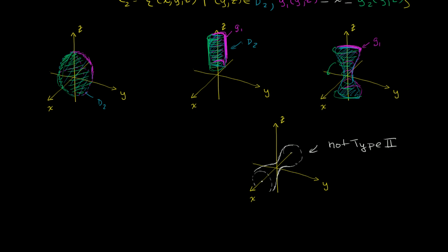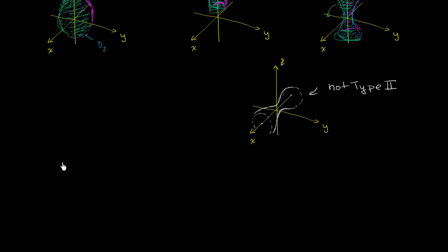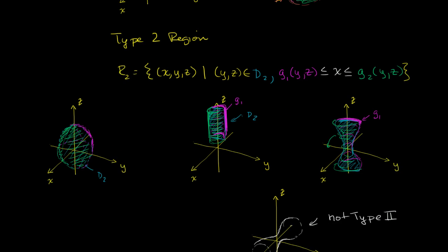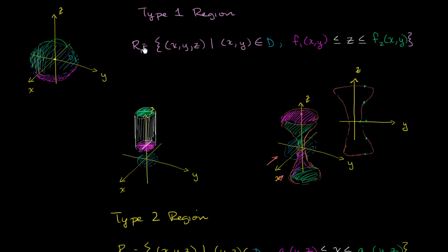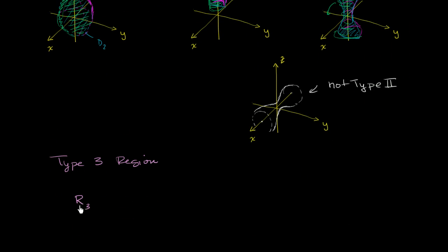After going through type 1 and type 2 region definitions, you could probably guess what a type 3 region is going to be. A type 3 region is a region in three dimensions. I'll call it R sub 3, since we called the other regions R sub 2 and R sub 1. It's going to be the set of all points in three dimensions — all x's, y's, and z's — such that the x, z pairs are a member of a domain D sub 3.